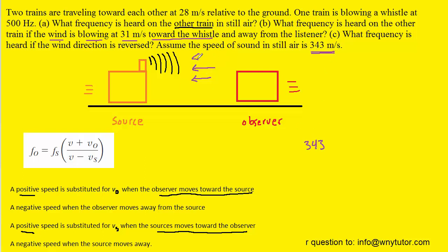But if we have wind blowing against that speed of sound then we're going to have to slow down the sound and therefore subtract 31 meters per second. So all we have to do is adjust the value for V.